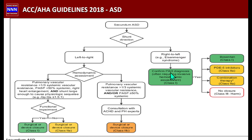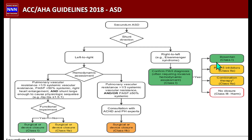If the shunt has reversed to right-to-left, this is Eisenmenger syndrome. The ASD initially had a left-to-right shunt, but as pulmonary pressure rose above systemic pressure, flow reversed. This is confirmed by pulmonary arterial hypertension on right heart catheterization or echocardiography. In this case, we must try medications that dilate pulmonary arteries to reduce pulmonary vascular resistance.